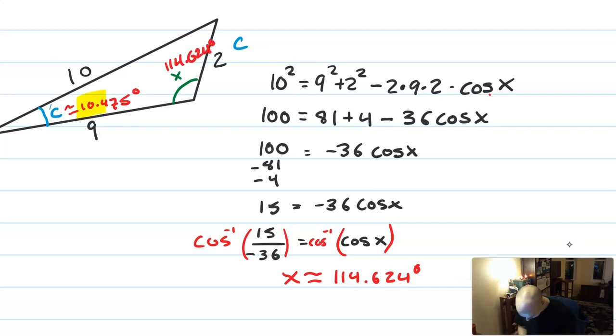About 114.624 degrees. And that's a much more reasonable answer. And so now I've got two angles of this triangle I solved with law of cosines. I could, of course, find the third angle by subtracting from 180, and then the triangle would be solved.